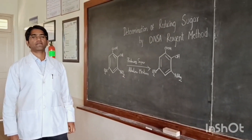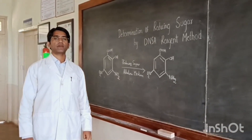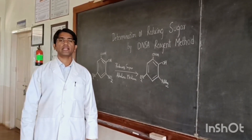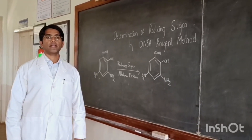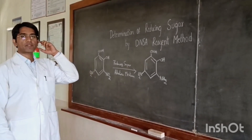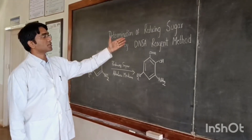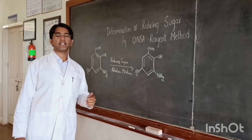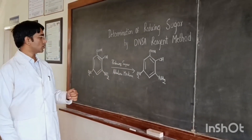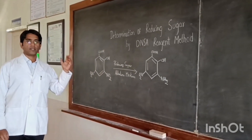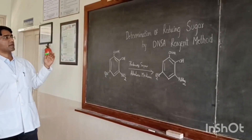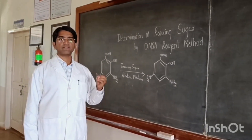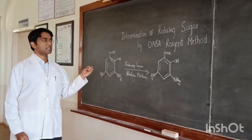Hello everyone, myself Dr. Pradeep Kumar M.R., working as assistant professor in the department of pharmaceutical chemistry of Cayley College of Pharmacy, Hubli. Today I will be giving you the demonstration with respect to determination of reducing sugar by dNSA reagent method. dNSA is nothing but dinitrosalicylic acid method. In this particular method we are going to determine how much concentration of the reducing sugar is present in the given sample.